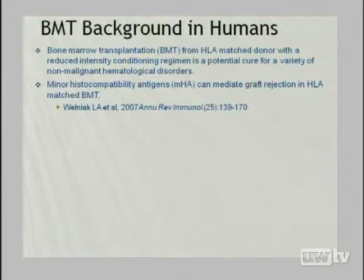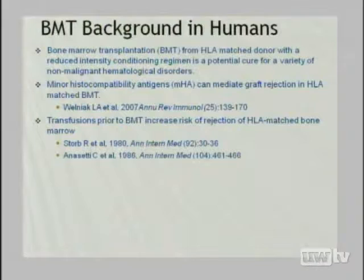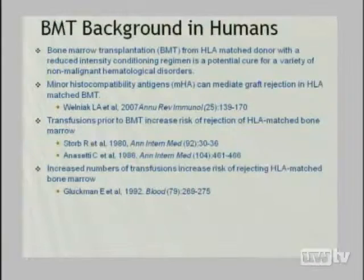In cases when rejection occurs in HLA-matched transplants, the assumption is de facto that it is across minor barriers, because the major barriers haven't been crossed. We know in humans that minor antigens can mediate bone marrow transplant rejection. We also know that transfusions prior to bone marrow transplant increase the risk of HLA-matched bone marrow rejection — studies in aplastic anemia patients who had never been transfused showed much higher rates of successful transplantation — though the relationship is suggestive but not demonstrative due to confounding.